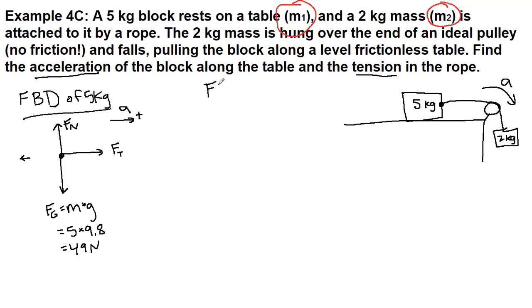We will also draw the free body diagram of the hanging mass, so that's the 2 kilogram mass. And we see that gravity, first of all, is always straight down. So gravity, just as before, is mass times the acceleration of gravity. But in this case, it's 2 times 9.8, and that's 19.6.